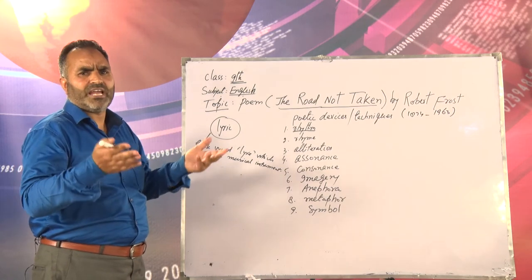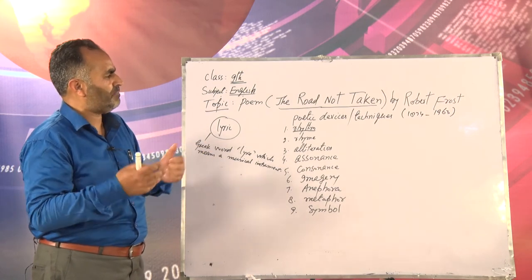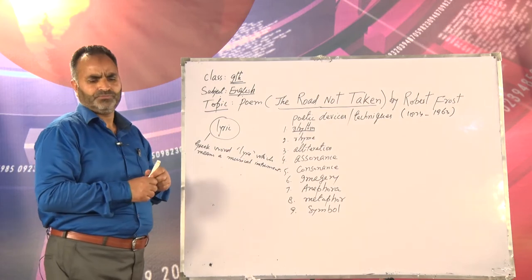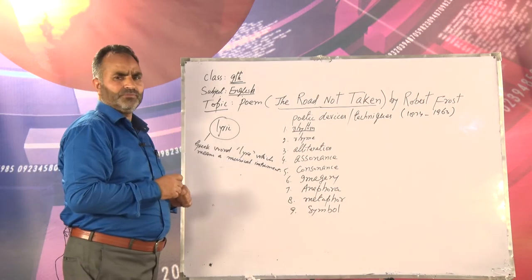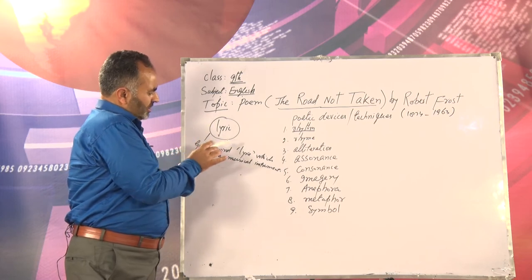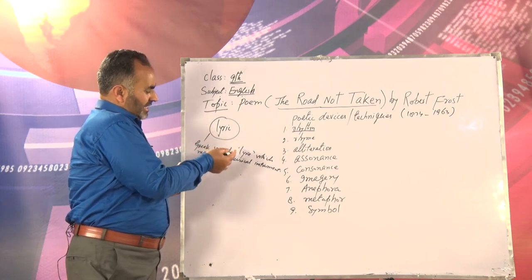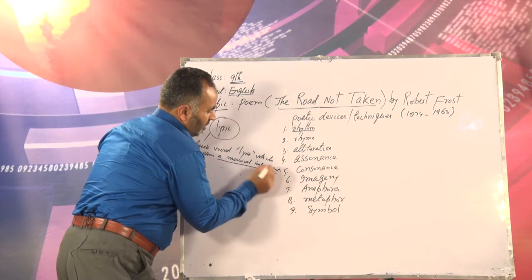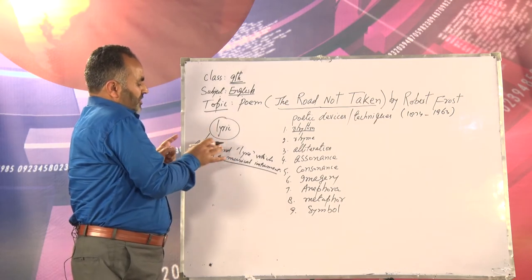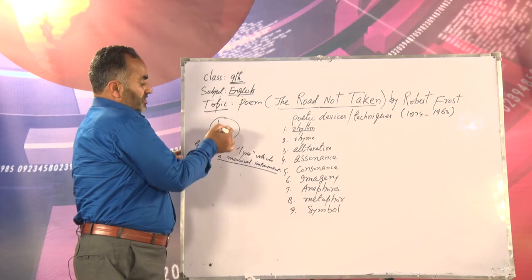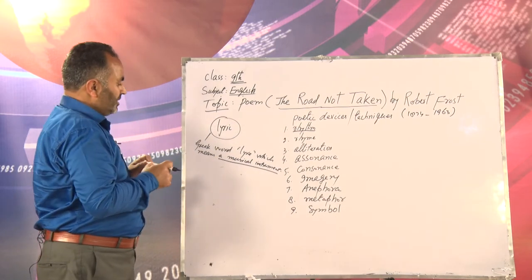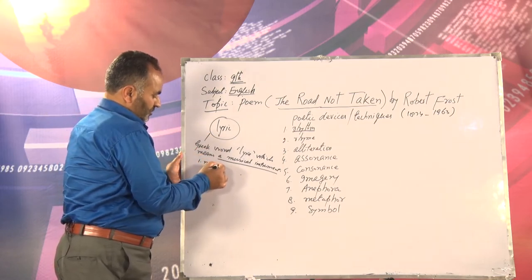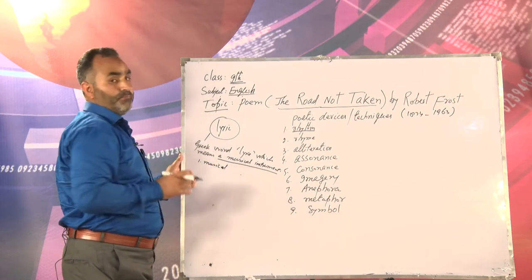Now if we look at this poem, 'The Road Not Taken,' we have poems of different categories — sonnets, odes, epic, narrative poems. This poem comes under the category of lyric. A lyric is a Greek word — it has come from the Greek word 'lyra' (L-Y-R-E), which means a musical instrument. So when it has come from a word meaning musical instrument, it has something to do with music. That is why we say a lyric poem is musical — first of all we can call a lyric a musical poem.